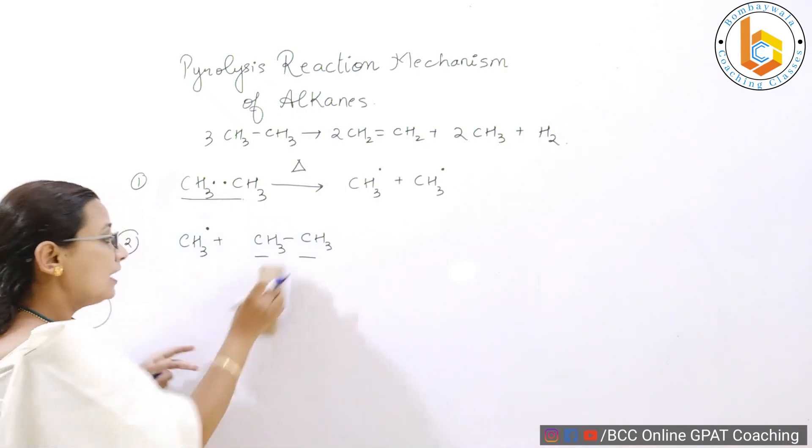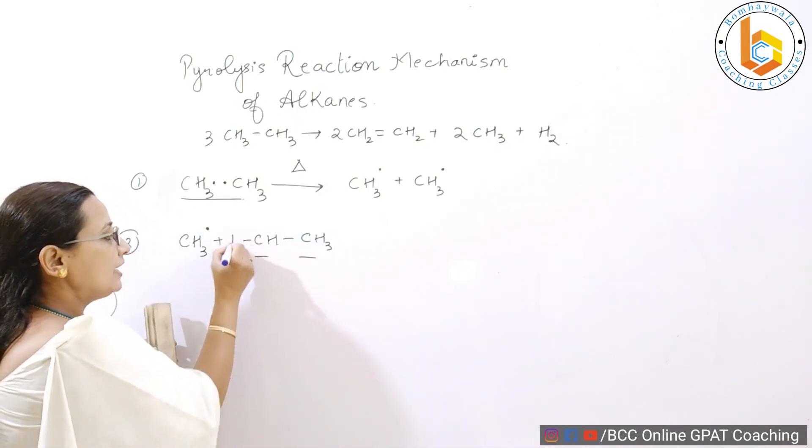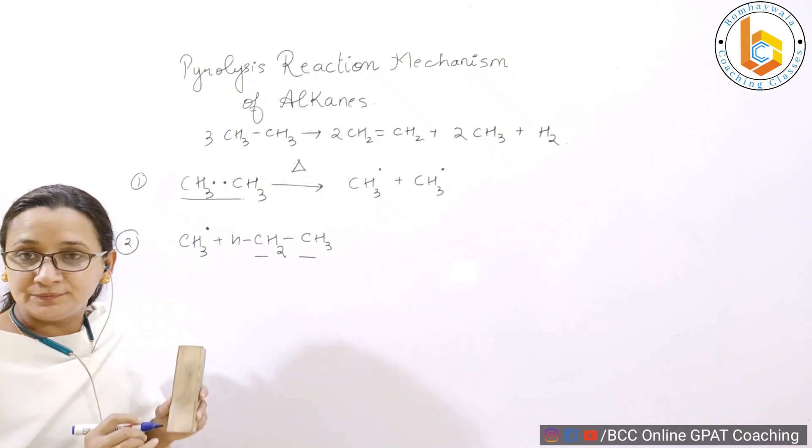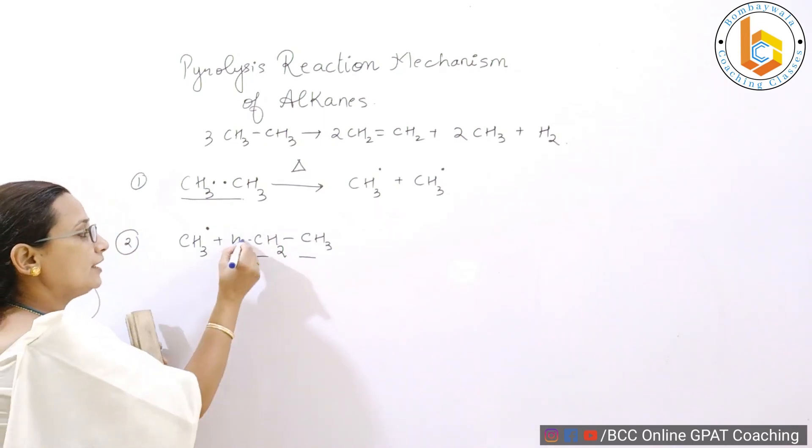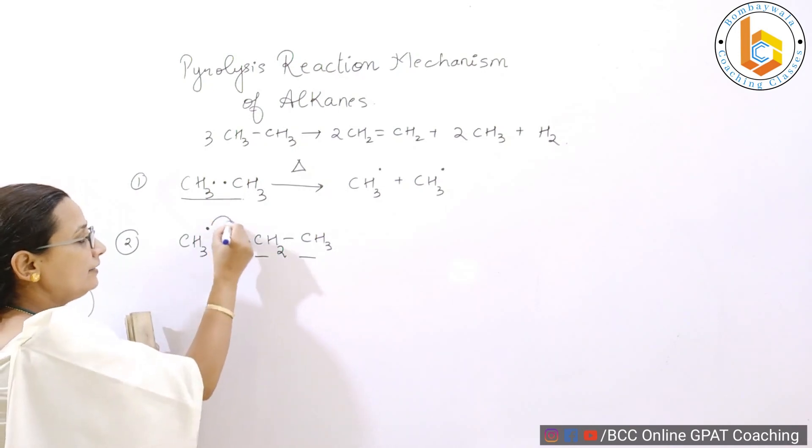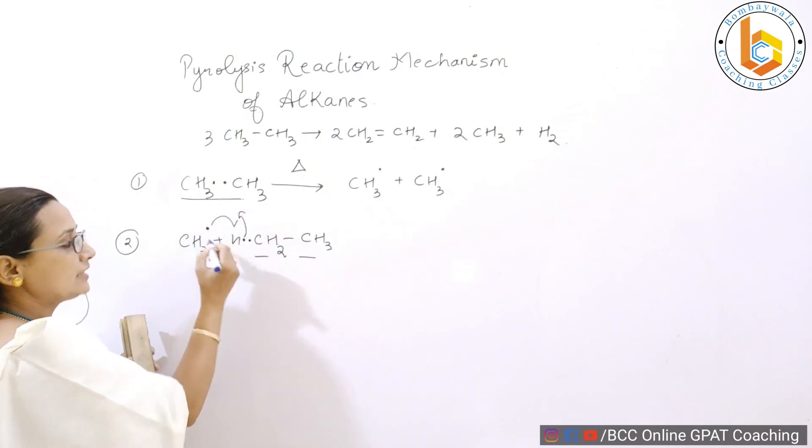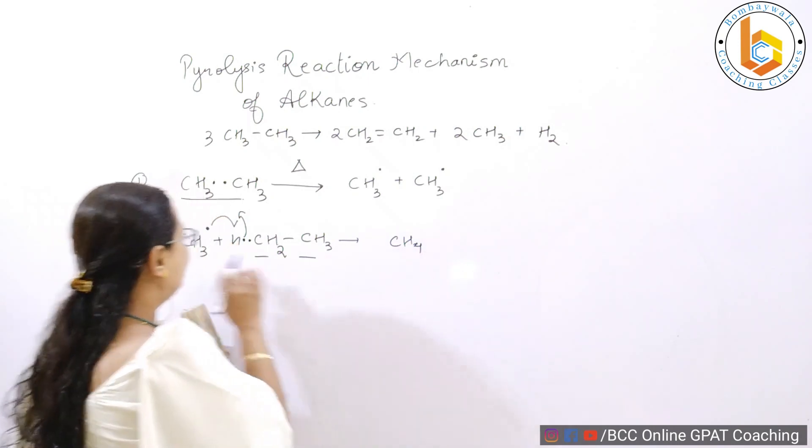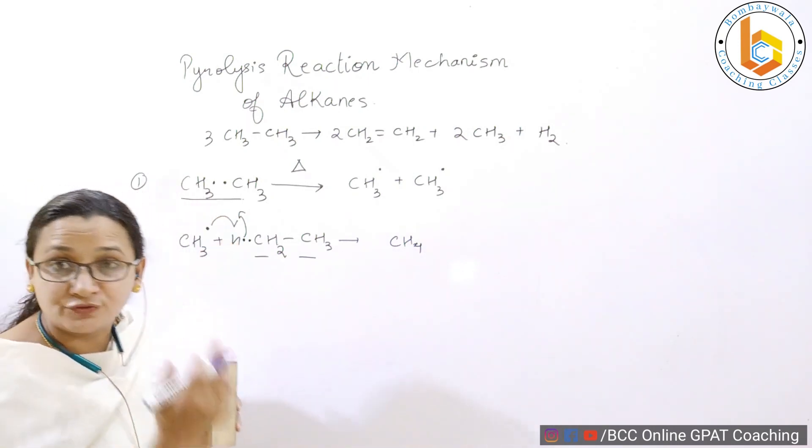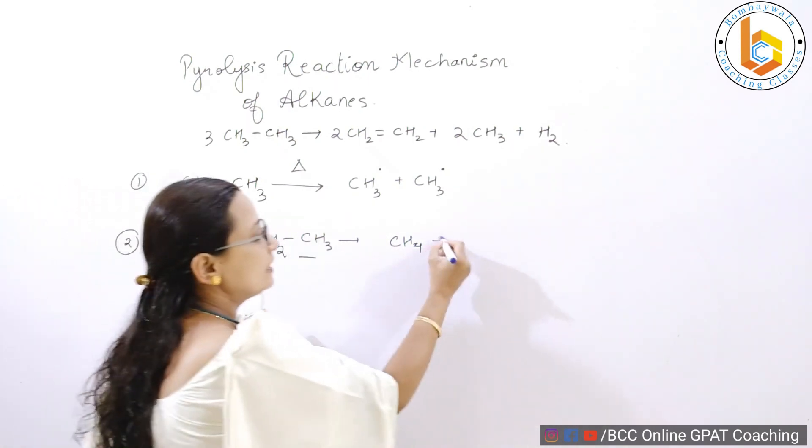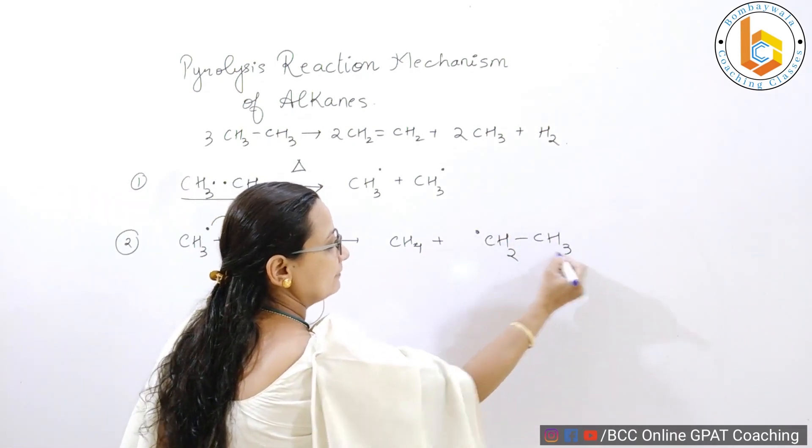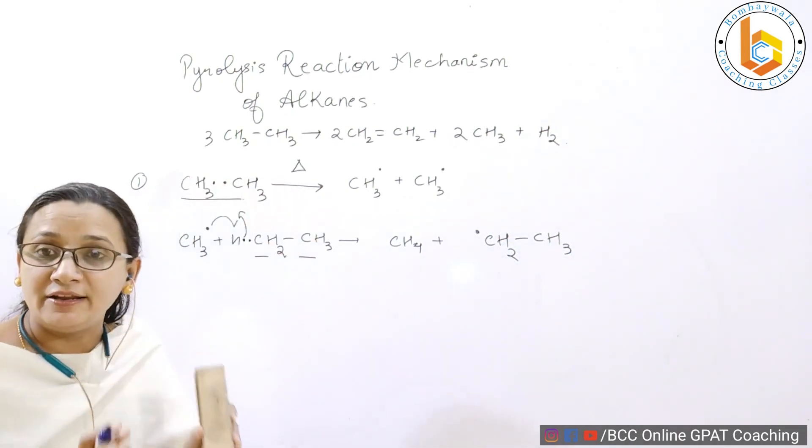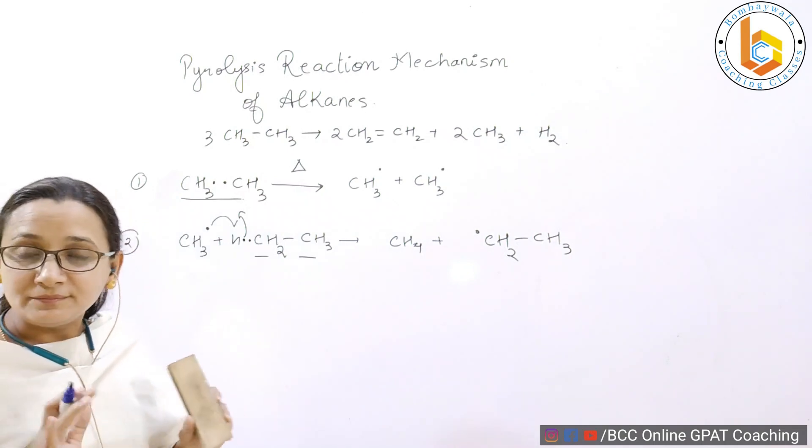For the sake of convenience, I am writing this as H and this is CH2. So now what happens? There is again a homolytic equation and CH3 combines with this H to give you a methane. CH3 plus H gives you CH4. And what remains is an ethyl free radical. An ethyl free radical is formed.